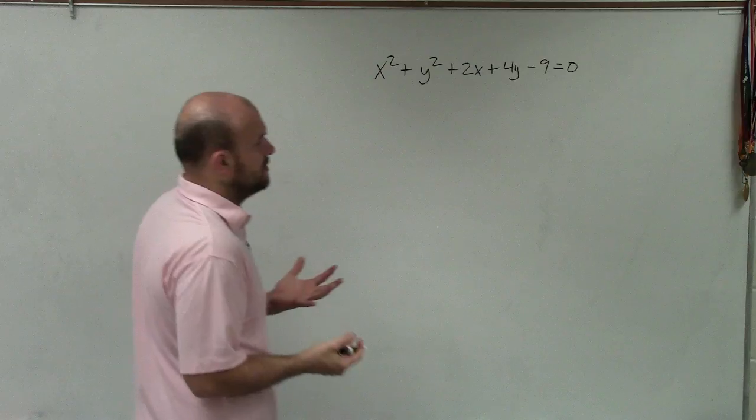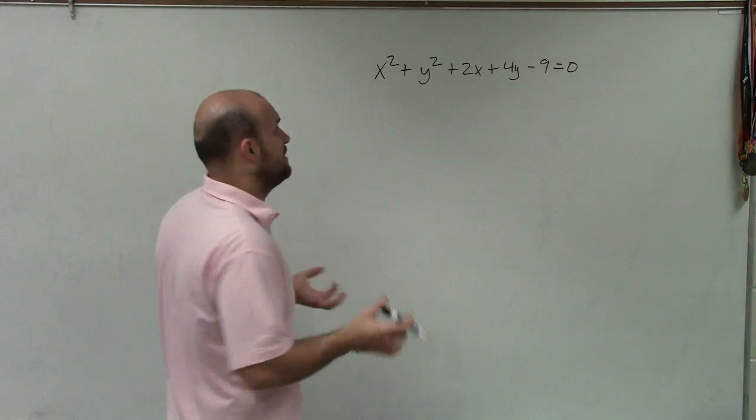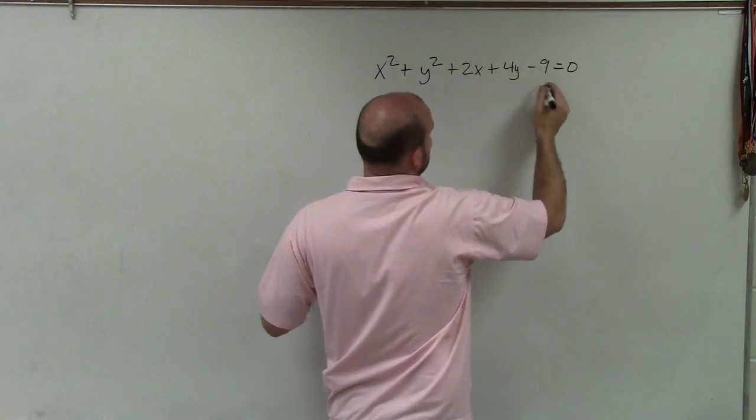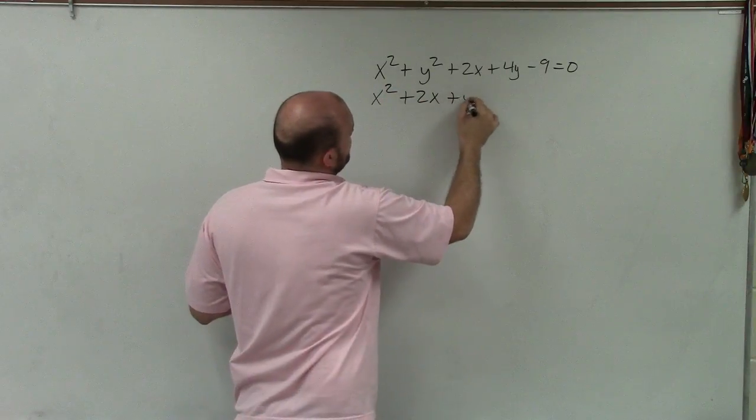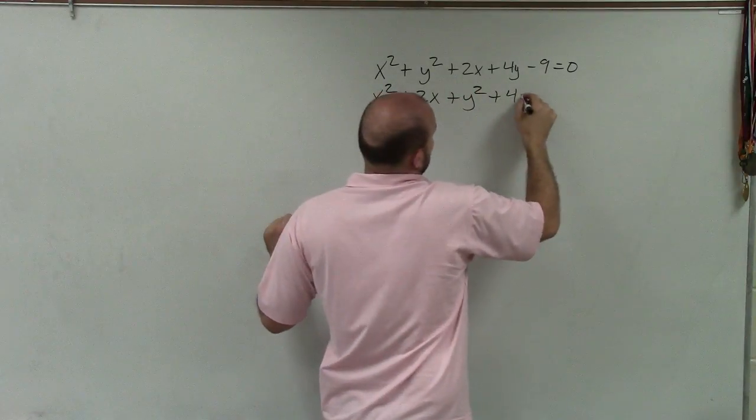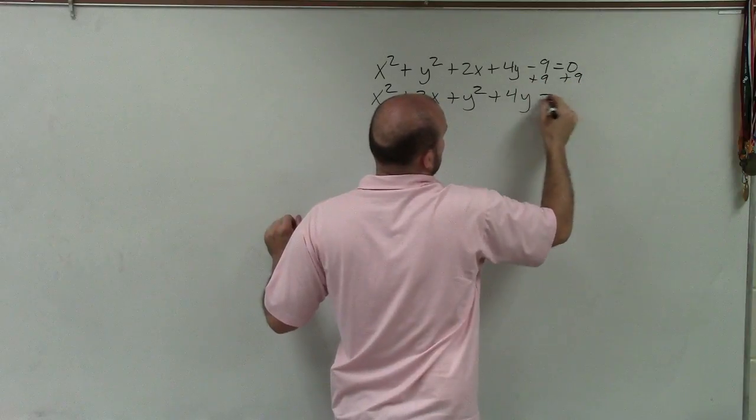So the first thing I'm going to do to complete the square, what I want to do is I want to group my x's and my y's, and I want to get this 9 to the other side. So I'll rewrite this as x² + 2x + y² + 4y, and then I'll add 9 to both sides.